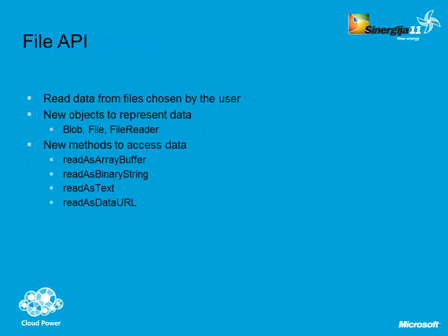File API allows you to access files on the client computer. Of course, the user must open the file or tell you that you can access it — so the user must really allow you to do something with some file. It's not possible to go and read the entire file system and manipulate any file you want. Everything must be allowed by the user.